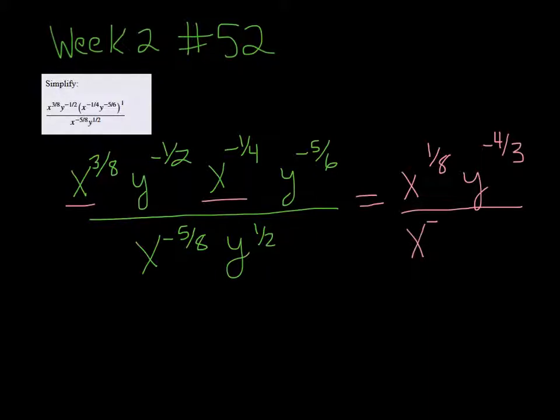All right, we haven't done anything with the bottom yet. For that, we're going to use the quotient rule, which is, you recall, you want to subtract the exponents now. So I have 1 eighth minus a negative 5 eighths. That's going to be a positive 6 eighths, which reduces, but we'll do that in a moment. And then negative 4 thirds minus a half is a negative 11 sixths.